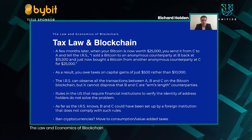The IRS can observe all the transactions between A, B, and C on the blockchain, but it can't disprove that B and C are arm's length counterparties. The rules in the US that require financial institutions to verify identities — know-your-customer rules and such — don't solve the problem, as B and C could have been set up by a foreign institution that doesn't comply with those rules. That leaves you with a bit of a conundrum: do you try to ban cryptocurrencies, which might be hard and unappealing? Another implication is that it could spark a move away from income and capital taxes to more consumption or value-added taxes.